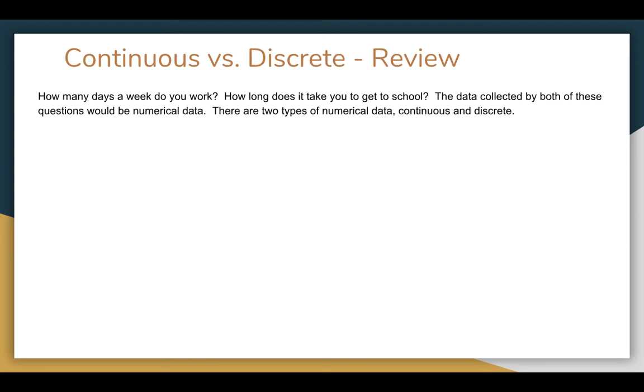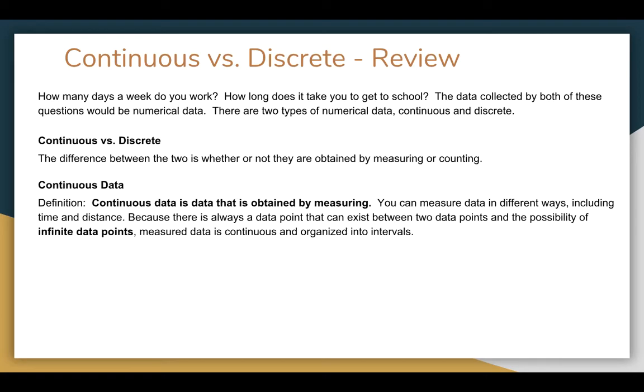So just as a review, this came up before when we talked about types of data. How many days of work do you work? Days a week do you work? How long does it take for you to get to school? These are ideas for collecting numerical data. But we've got two types of data, continuous and discrete. Discrete data, sorry, the difference is if you're measuring or counting. And so in continuous data, you're always obtaining it by measuring. You can measure it in different ways, like measuring it on a meter stick or a timer, accurate as possible, as quick as possible.